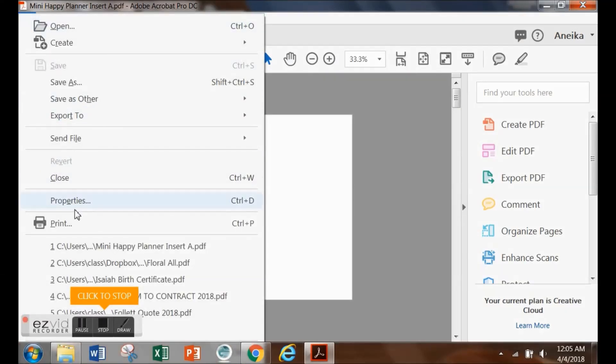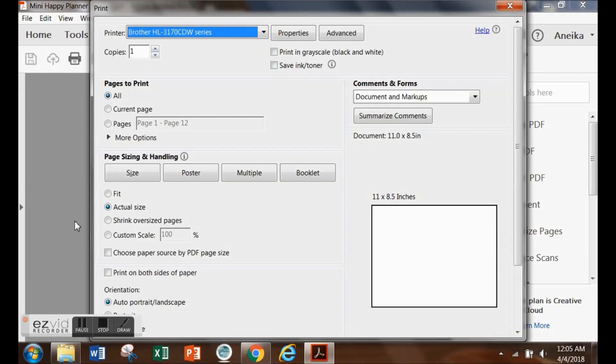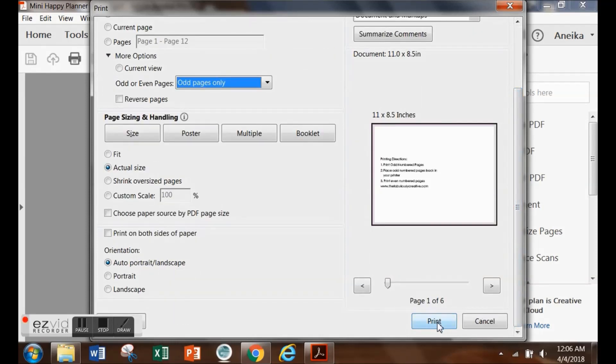Now that I have the file open, the first thing I do is go to file and hit print. Right under the pages, there is a little arrow that says more options. If you click that arrow, a drop-down box will appear and in that box you can select all pages in range, or you can click odd pages or even pages only. So click the even pages only and then hit print.